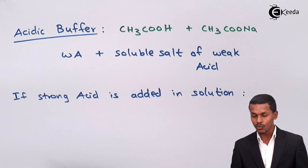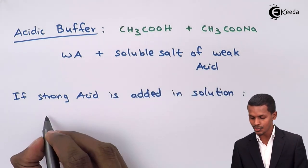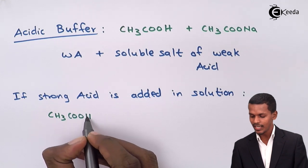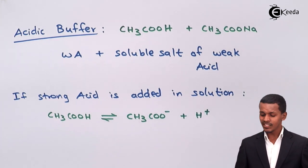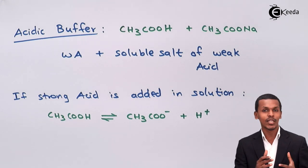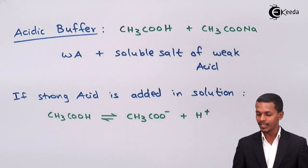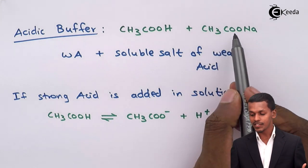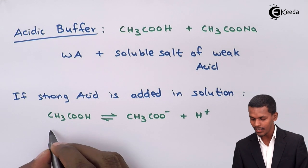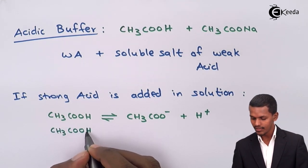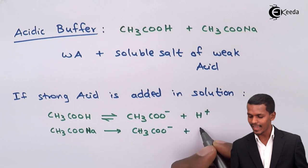In this acidic buffer, the weak acid CH3COOH dissociates into CH3COO⁻ plus H⁺. Since it is a weak acid, the equilibrium is maintained and only a partial amount of H⁺ is dissociated. The soluble salt CH3COONa (sodium acetate) dissociates completely because it is soluble in water, giving CH3COO⁻ along with Na⁺.